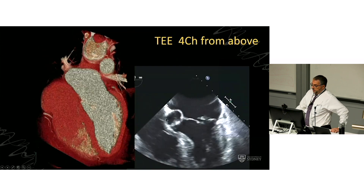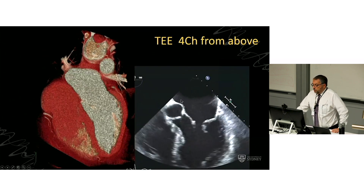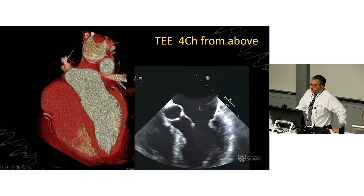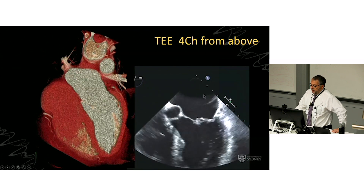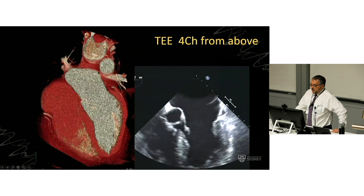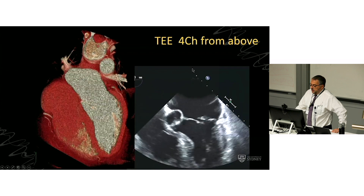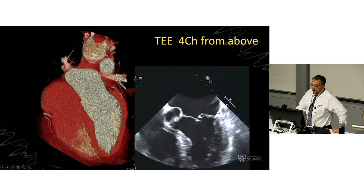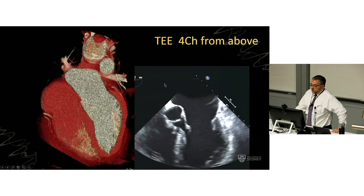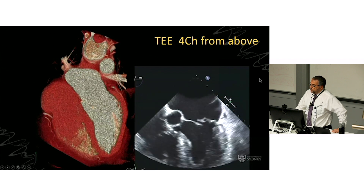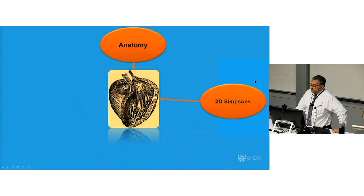Transesophageal echo gives the same four-chamber view, but it is actually taken from above. This view is upside-down relative to the transthoracic — it is taken as if you're standing at the head, because the spine is over here and the descending aorta is over here, with the esophagus obviously just there. So your perspective for transesophageal echo is exactly opposite to transthoracic.